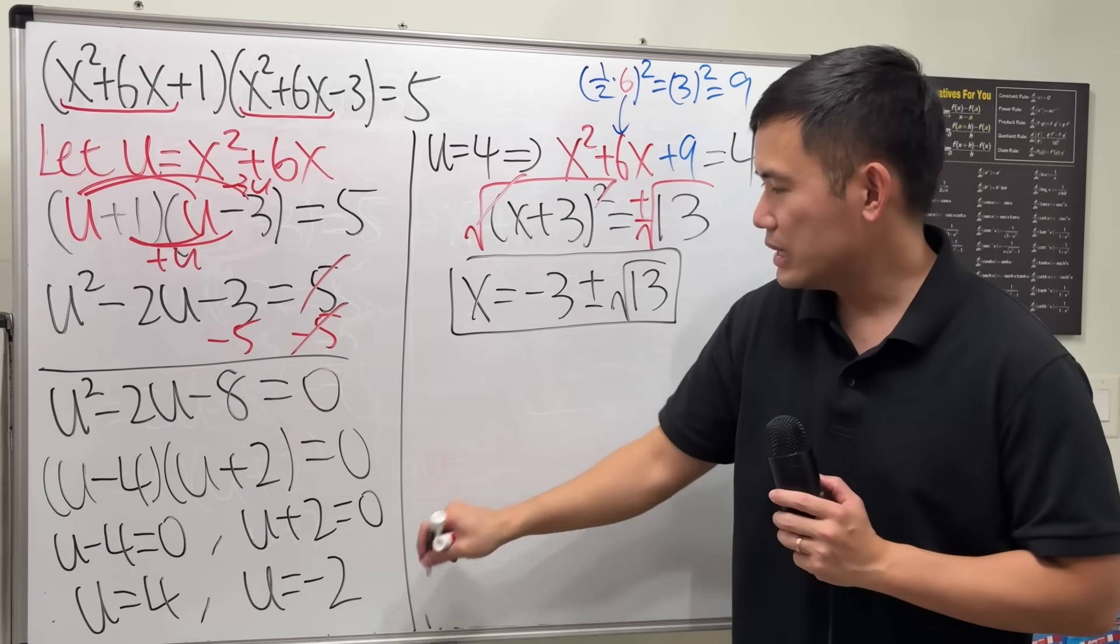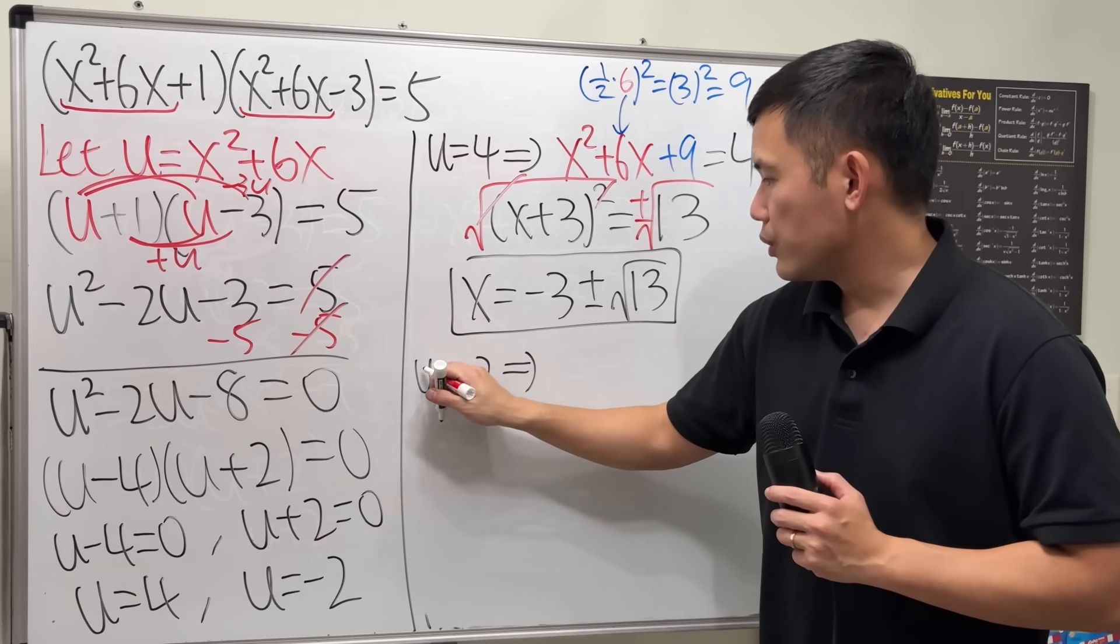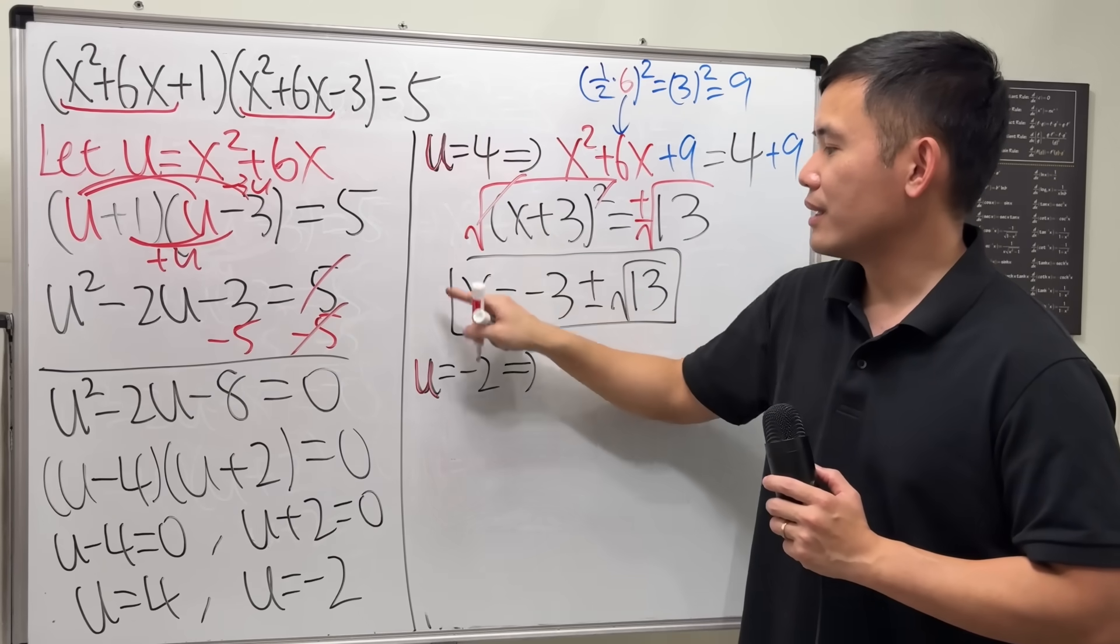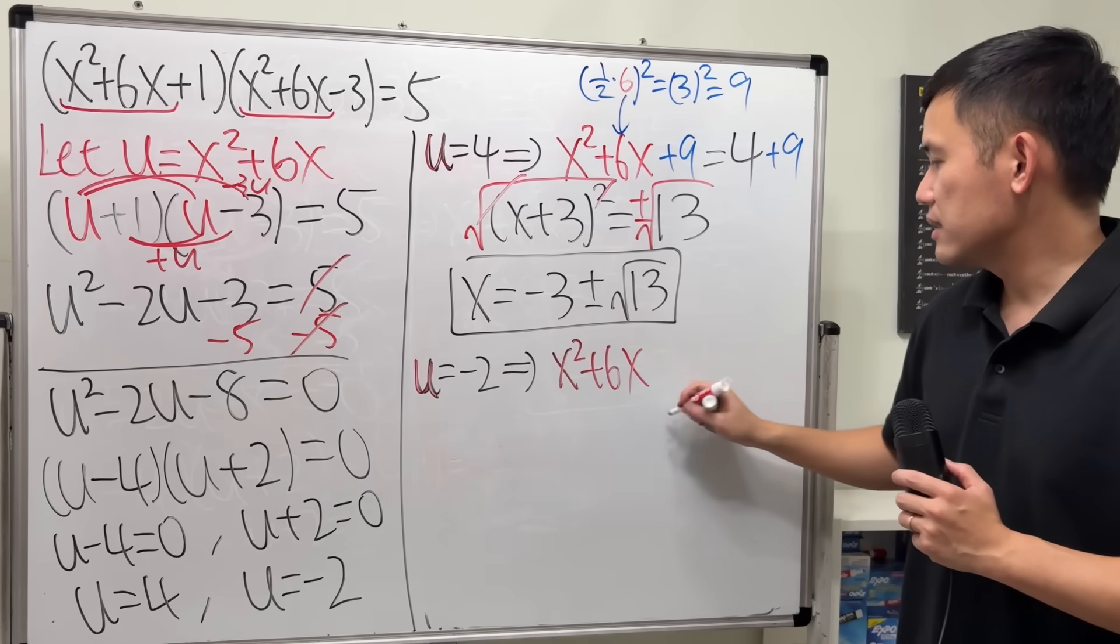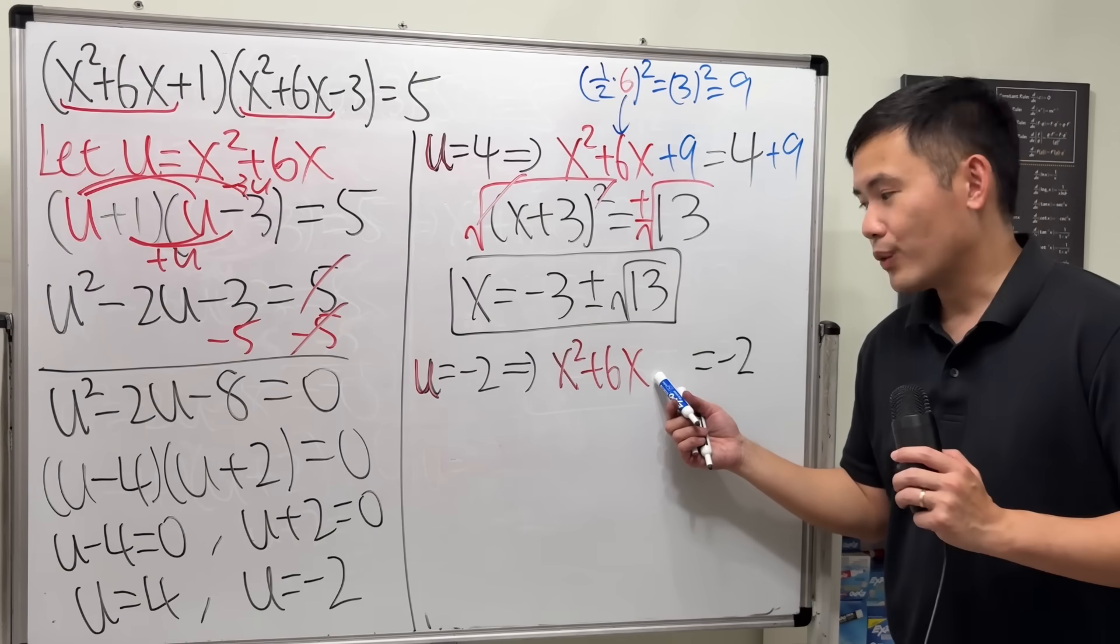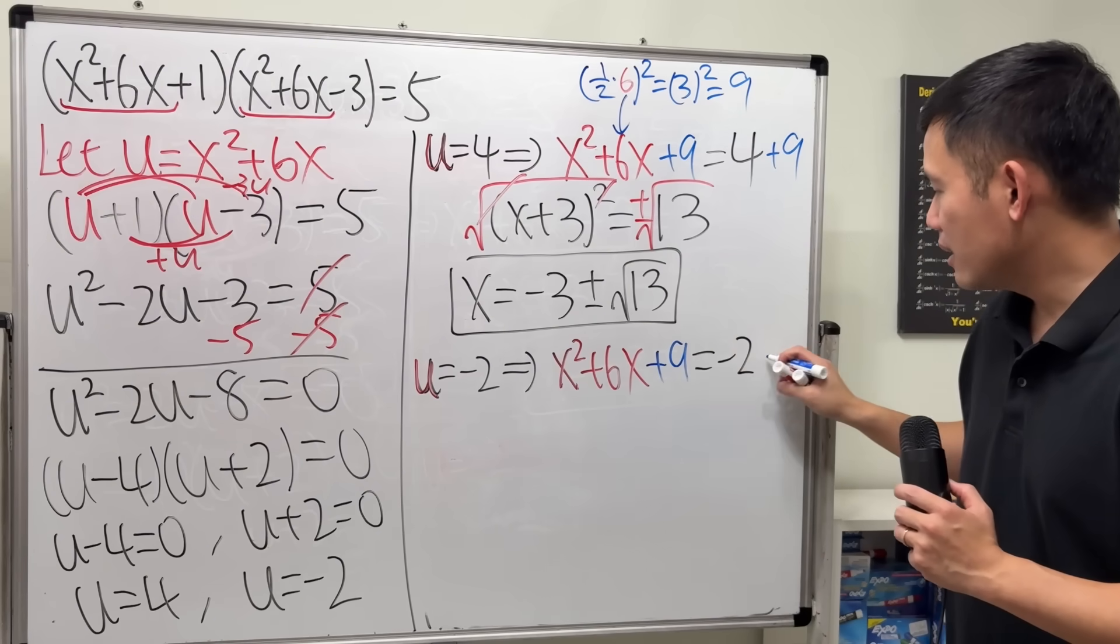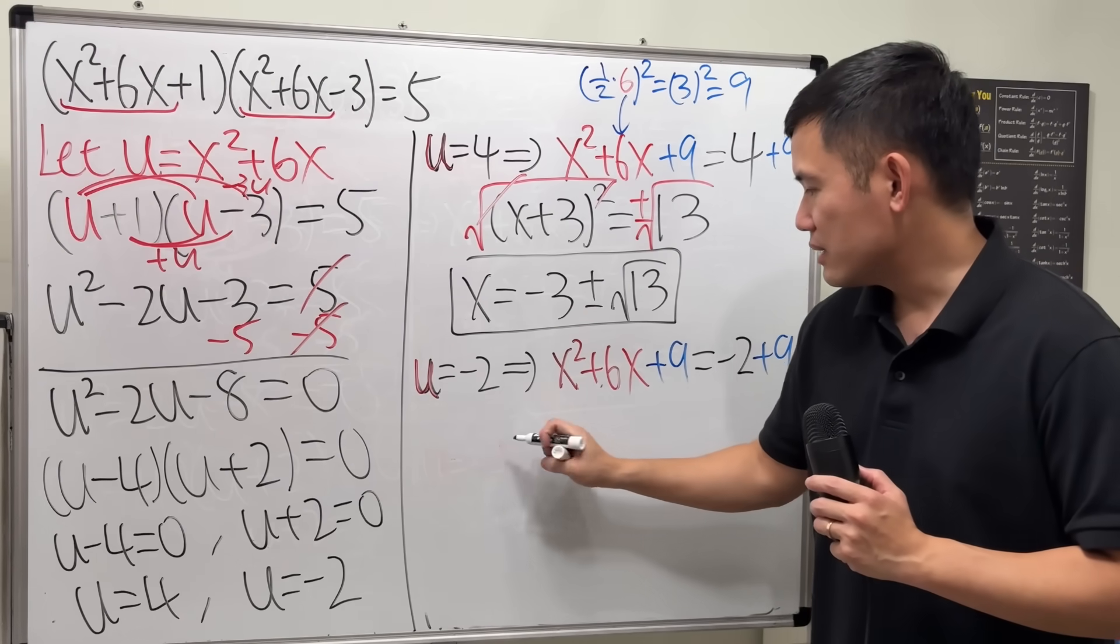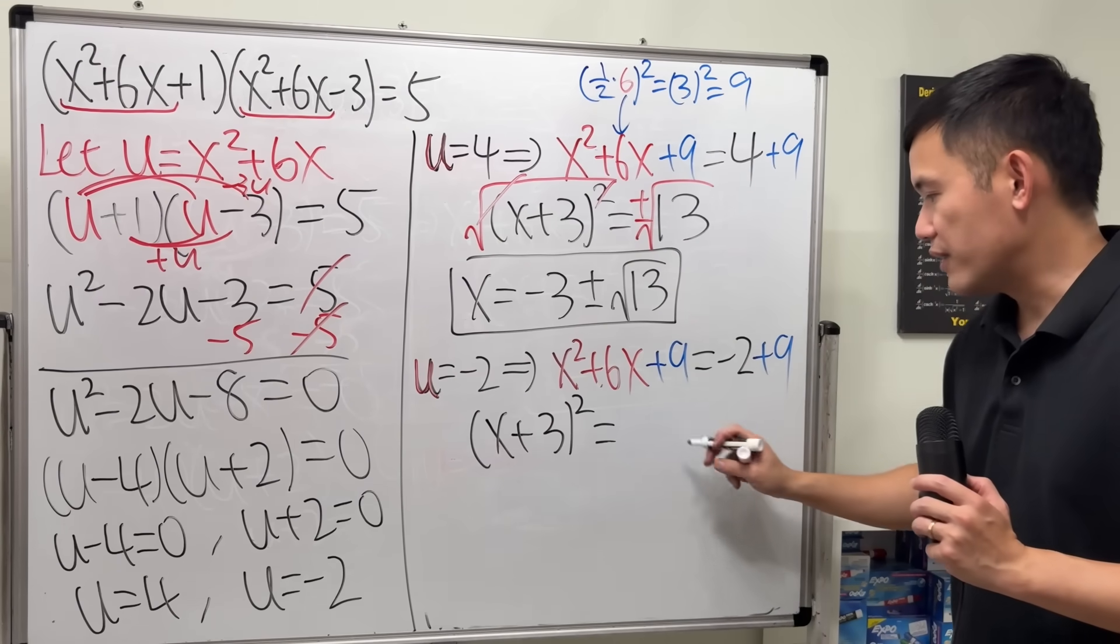Now, the second case is when u is equal to negative 2. The u, right here, I should have colored the u in red. The u is that, so x squared plus 6x, this time is equal to negative 2. We are going to add 9, because it's the same thing. So, add 9, add 9, right here. Again, that would be x plus 3 squared. This time, we get 7.